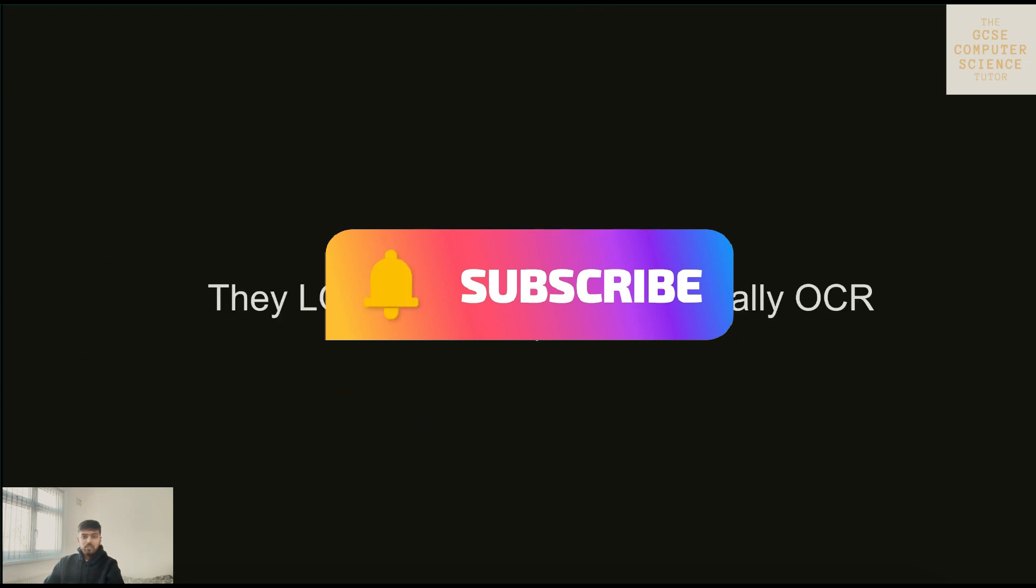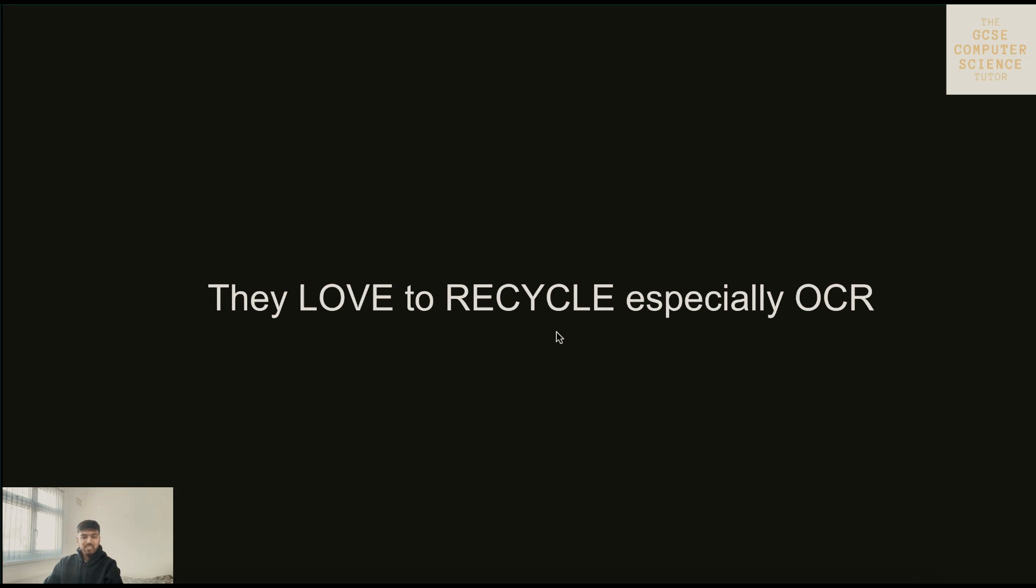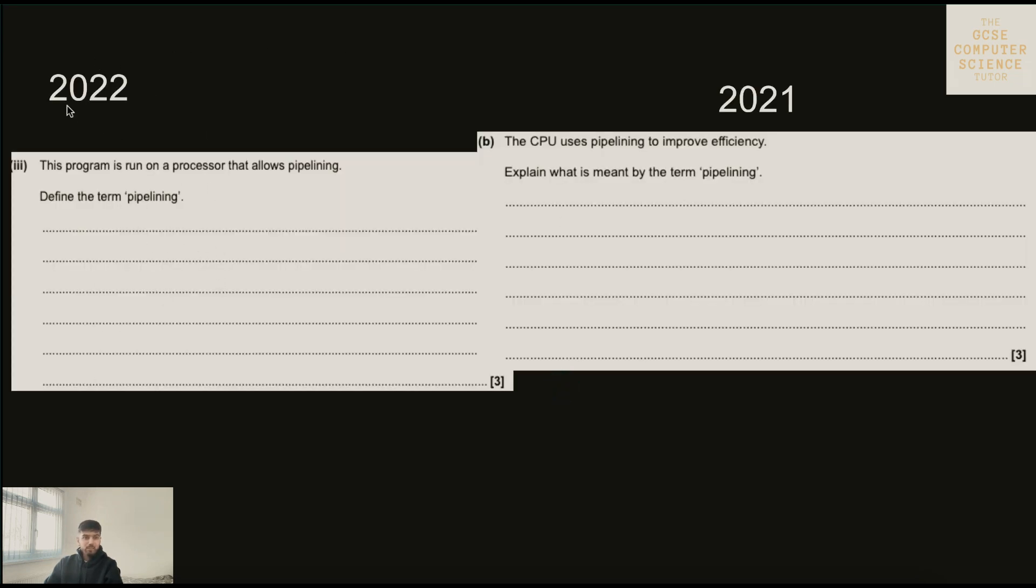Especially with OCR, they love to recycle past exam questions. We've seen this so many times. For example, this pipelining question came in 2022 and it was also used in 2021 and also used in 2018. Just learning these definitions can boost your mark by so much. Make sure you go through your past papers and learn and write down in a separate book all the exam definitions that have come up starting from 1.1, 1.2, 1.3, then 2.1, 2.3 - all the sections that you have. Just go through past papers on Physics and Maths Tutor and even the hardcore papers like 2022, 2021, sample papers, everything.